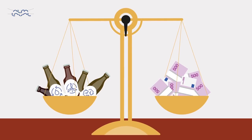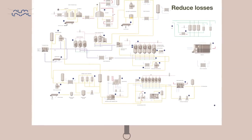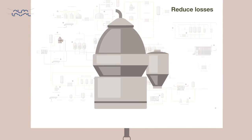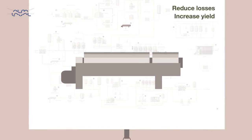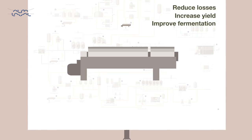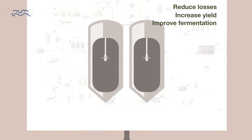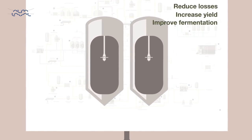For example, you can reduce losses by using separators for beer recovery, increase yield with decanters for water recovery, and improve fermentation by installing rotary jet heads. All built together in one efficient process block.